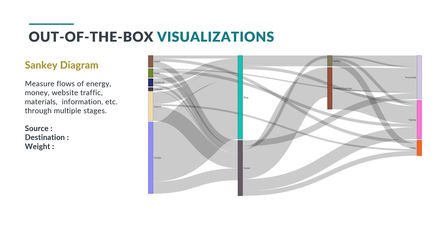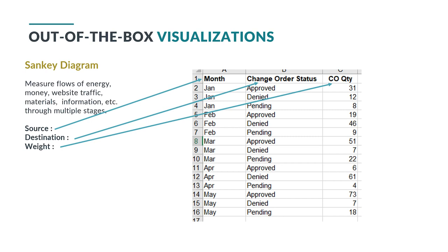To utilize a Sankey diagram, you simply need a source — meaning where the flow starts — a destination, where it went to, and then how much traffic or flow there was, measured as the weight. I thought it would be fun to work with an example. If I have a project where change orders are happening and I want to see the flow of change orders represented visually, I've created a spreadsheet that shows the different months my project is going on and the different change order statuses — meaning were the change orders approved, denied, or are they still pending — and then how many change orders in that month were approved, denied, or still pending. I want to represent that visually.